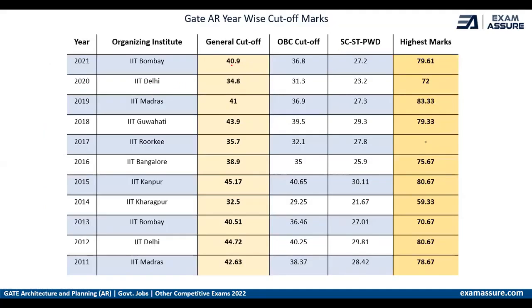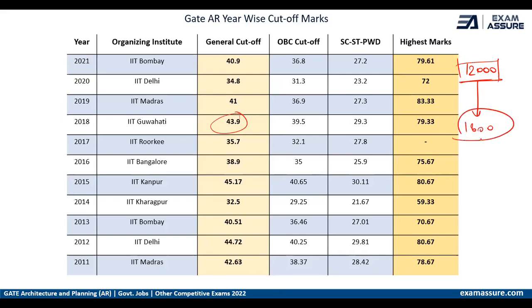This is the cutoff from the last 10 years. Last year it was 40.9 for general and 34.8 for other categories — these are the cutoffs after which you qualify for the GATE exam. But merely qualifying is not enough. Out of approximately 12,000 people who give the GATE exam, if you score above the general cutoff, you come within roughly the top 1,800. The top 100 persons are opted for IITs and SPA.